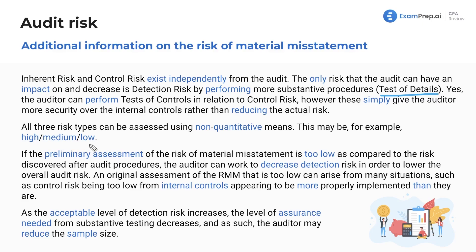In reality, an audit planning team may just say high, medium, or low. If the preliminary assessment of the risk of material misstatement is too low compared to the risk discovered after audit procedures, the auditor can work to decrease detection risk in order to lower the overall audit risk. An original assessment that is too low can arise from situations such as control risk being too low because internal controls appear more properly implemented than they actually are.